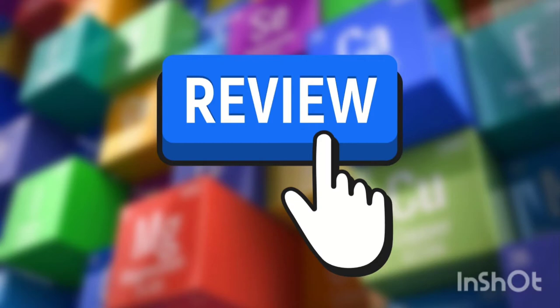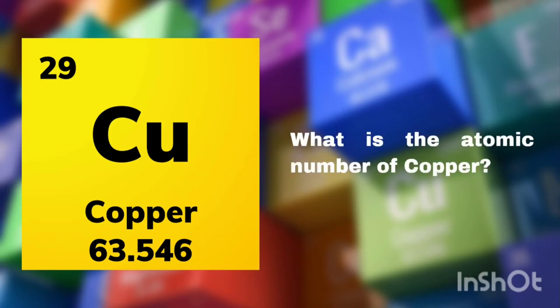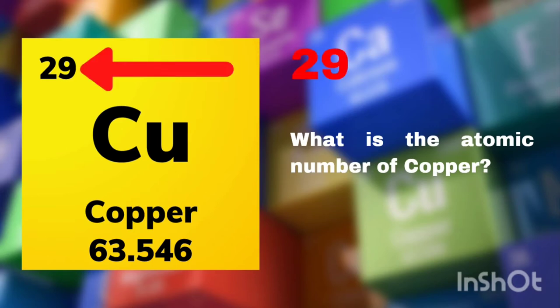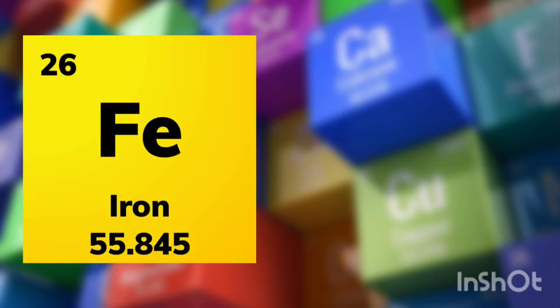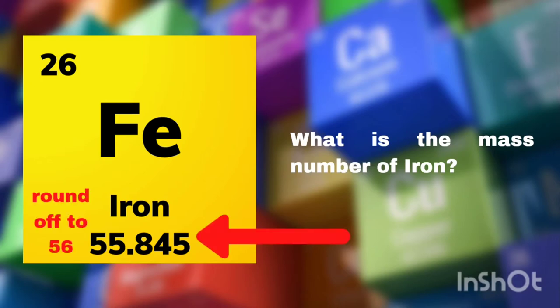Let us have a review of what we have learned last time. We have here the shorthand notation for the element copper. What is the atomic number of copper? If your answer is 29, then you are correct. Next, we have iron. What is the mass number of iron? If your answer is 56, then you are correct.